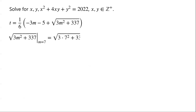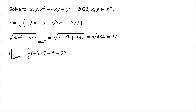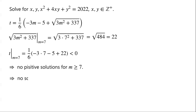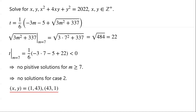When m equals 7, root of (3m squared plus 337) equals root of (3 times 49 plus 337) equals root of 484, which is 22. So t equals (1/6) times (negative 3 times 7 minus 5 plus 22), which is less than 0. So there are no positive solutions when m is greater than or equal to 7. That is to say, there are no solutions for Case 2. Thus, (x, y) equals (1, 43) or (43, 1) are the only two solutions of the original equation.